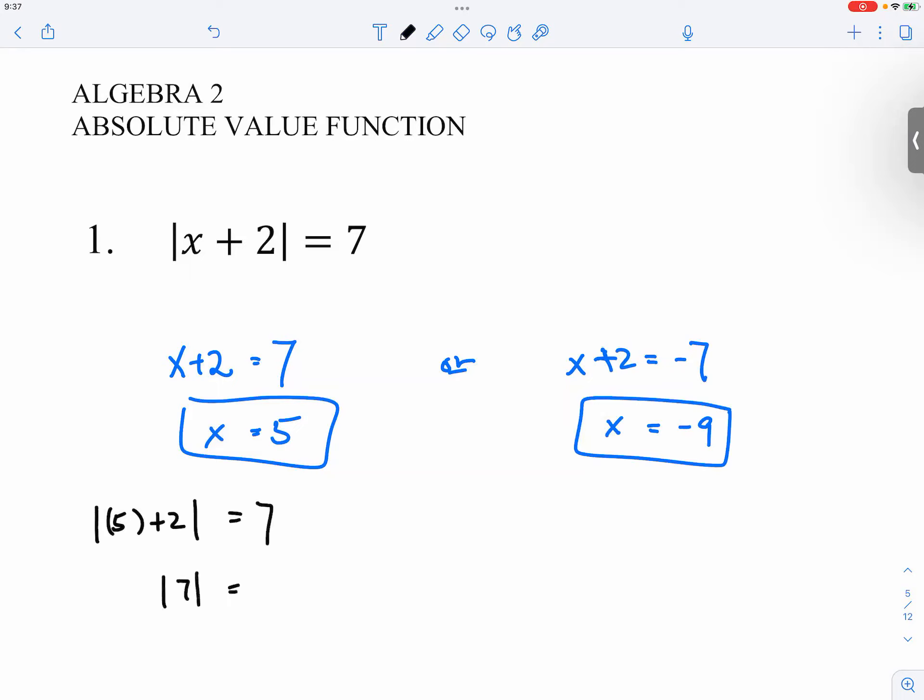Okay, so five plus two is seven, absolute value of seven is seven. So this is good. It is a solution because it makes a true statement.